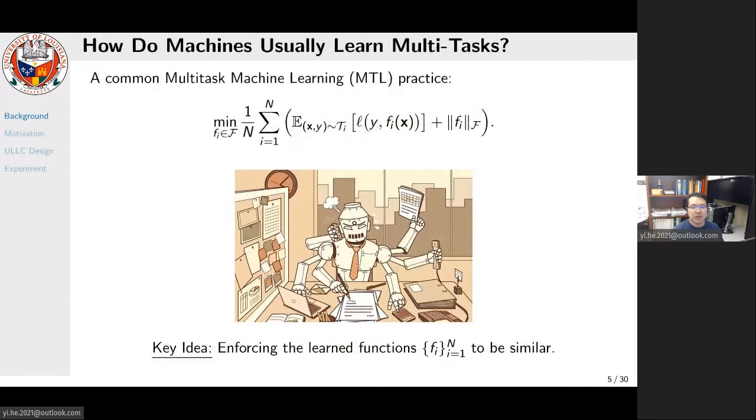A common practice to build such a multi-task machine is to realize an optimization objective. Suppose we have N tasks, each of which has certain data points with their labels. The idea is to train each classifier for an individual task, but meanwhile impose a regularized term to encourage those classifiers to be similar with each other or by sharing similar parameters. It's like enforcing a machine to use one mindset to perform well in different tasks.